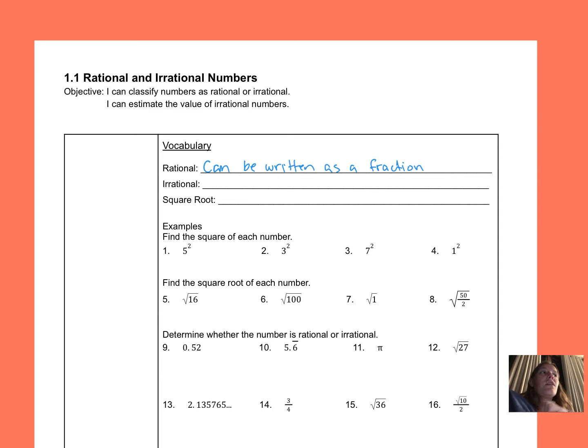So that could include fractions, it could include decimals that stop (terminating decimals), decimals that have a pattern or a number repeats over and over again (repeating decimal). It could be an integer, whole number, percent, any of those.